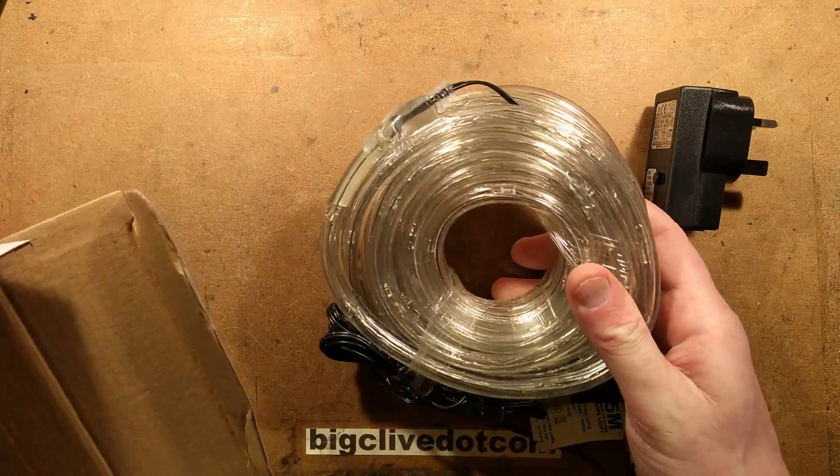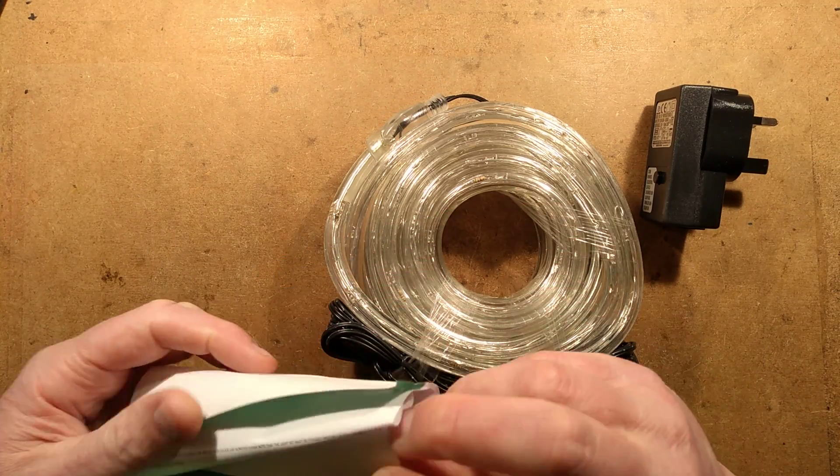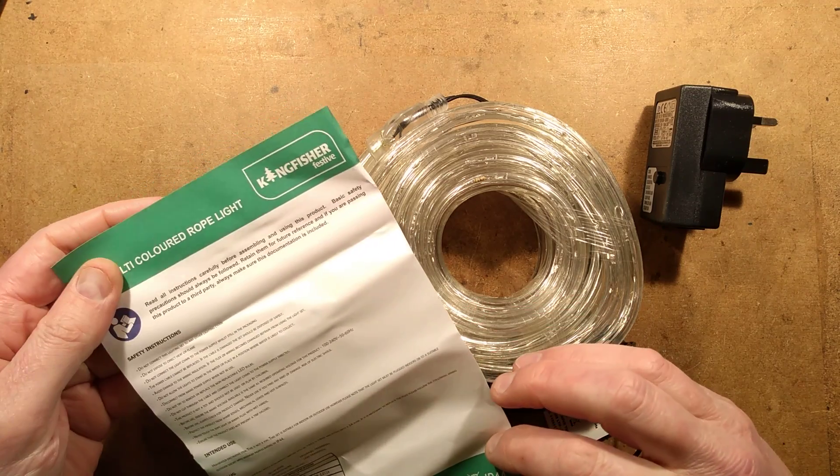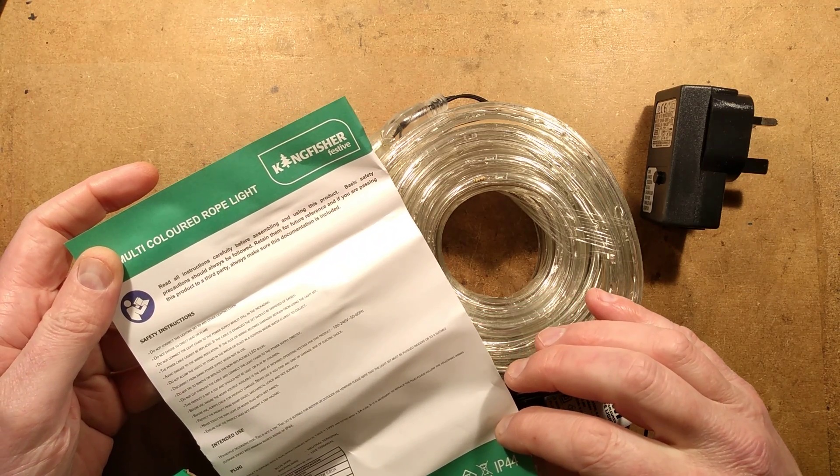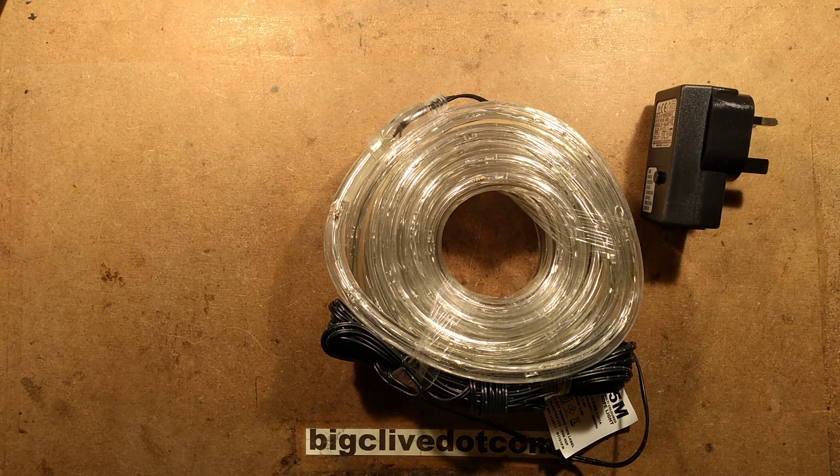And the rope itself comes with the usual general disclaimer and information sheet. Do not connect it to any other lighting chain. They really should update that shouldn't they? Because it's all out of date now.